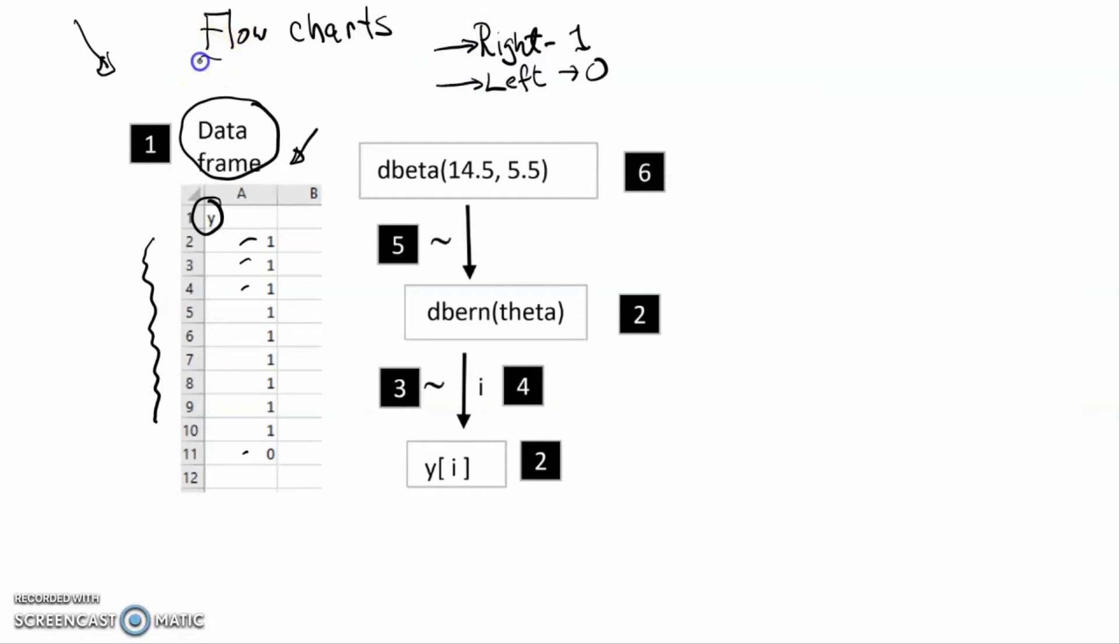These flowcharts, that's what we have here on the right-hand side, are sometimes referred to as directed acyclic graphs.